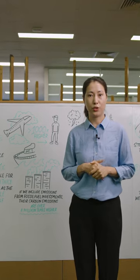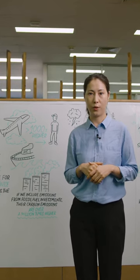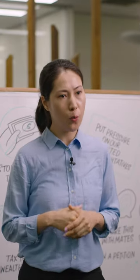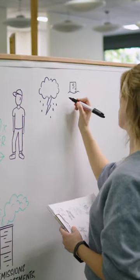It follows then that the rich should contribute the most to the reducing emissions bill. Is that happening though? Absolutely not. In fact, the opposite is. The world's poorest people are already struggling with disasters fueled by climate change.